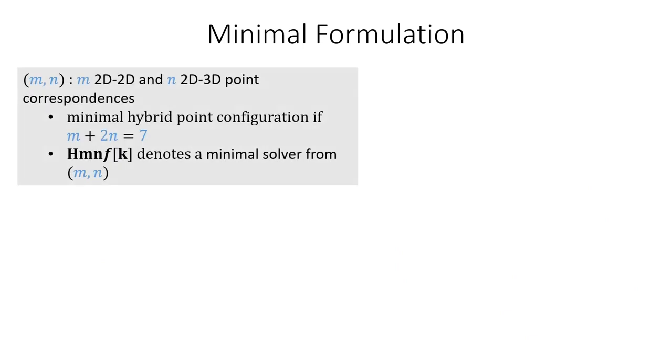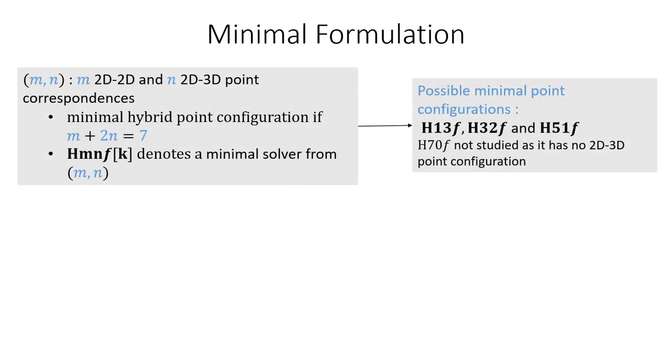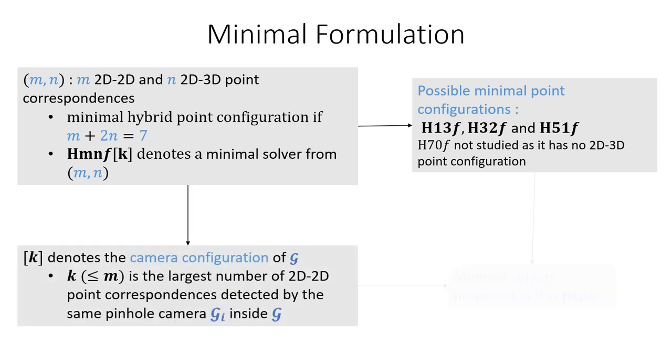There are three possible hybrid point configurations, and for each configuration we can have different camera configurations defined by the maximum number of 2D-2D point correspondences detected by the same pinhole camera within the generalized camera.